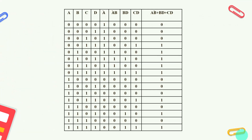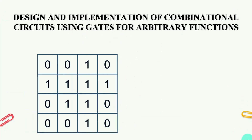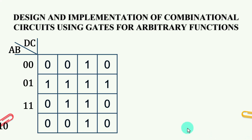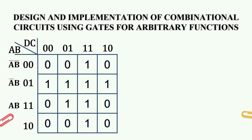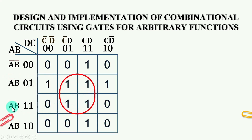We have a truth table for A, B, C, D - 4 variables - with terms ĀB, BD, and CD. The K-map for the 4-variable function is drawn. Labels on the left-hand side are: ĀB̄, ĀB, AB, AB̄. Top labels are: C̄D̄, C̄D, CD, CD̄. Grouping is performed to simplify the expression.